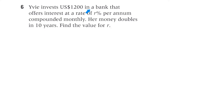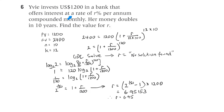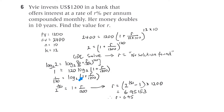Question 6. Evie invests $1,200 in a bank that offers interest at a rate of R% per annum, compounded monthly. Her money doubles in 10 years. Find the value of R. Present value is $1,200, future value is $2,400, N is 10, K is 12. The graphic display calculator solve function says no solution found, so we use logarithms. Taking log base 2 of both sides — since log base 2 of 2 equals 1 — and bringing down the exponent 120, then making R the subject, we get R is 6.95.